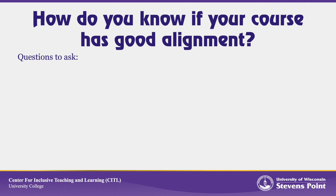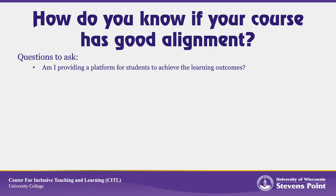How are you going to know whether or not your course has good alignment? Fortunately, there are questions you can ask yourself. First, ask whether or not you're providing a platform for students to achieve the learning outcomes. There are a number of components to this question.